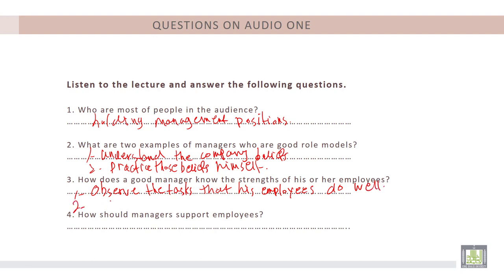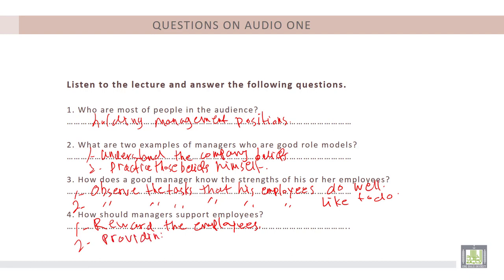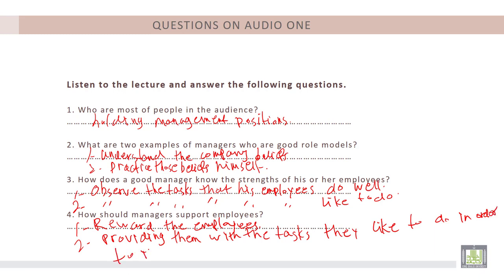Question three: How does a good manager know the strengths of his or her employees? He observes the tasks that his employees do well. Question four: How should managers support employees? This can be done by rewarding the employees and by providing them with the tasks they like to do in order to improve their skills.